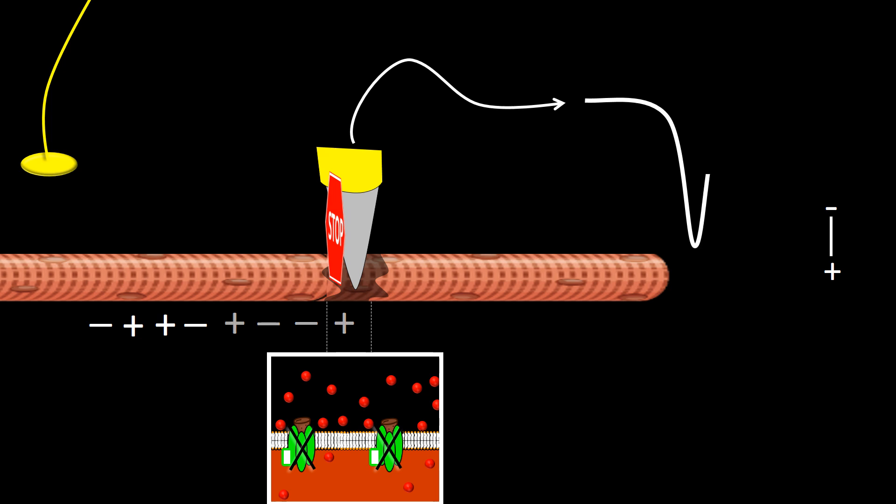The dissipating quadrupole is recorded as a turn of the tracing towards baseline, and as the quadrupole dissipates even more, the tracing gets closer to the baseline, until the quadrupole disappears and the tracing reaches baseline.